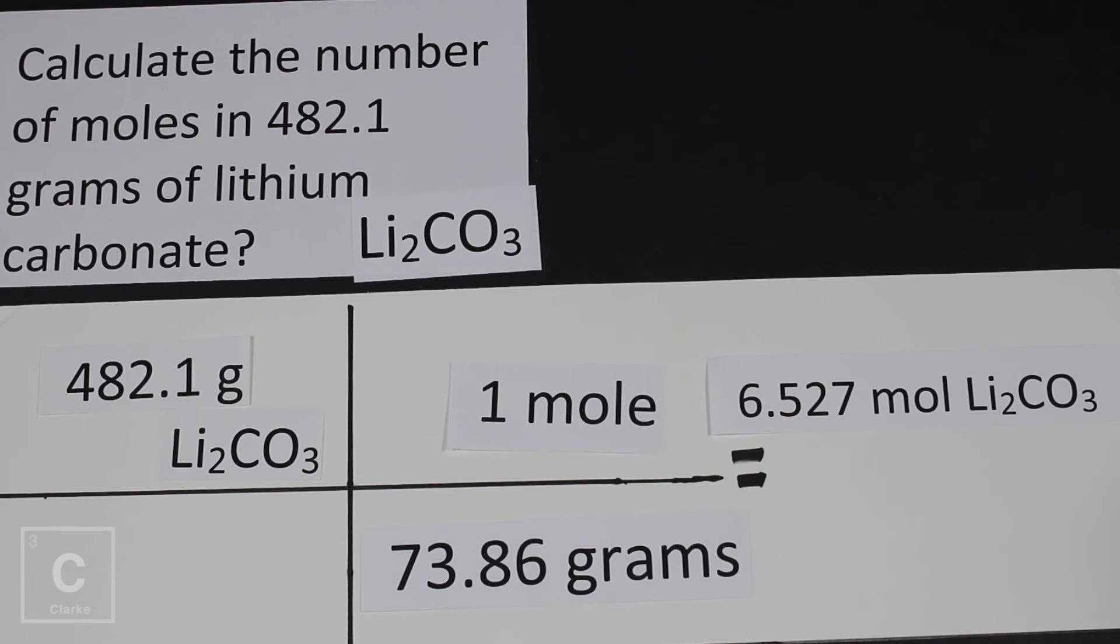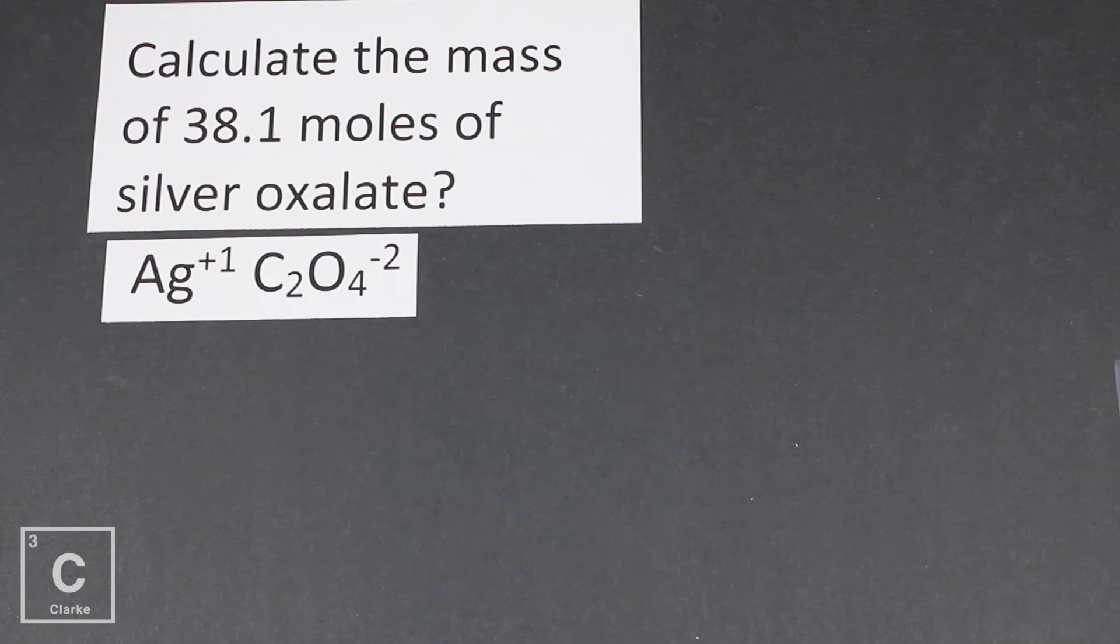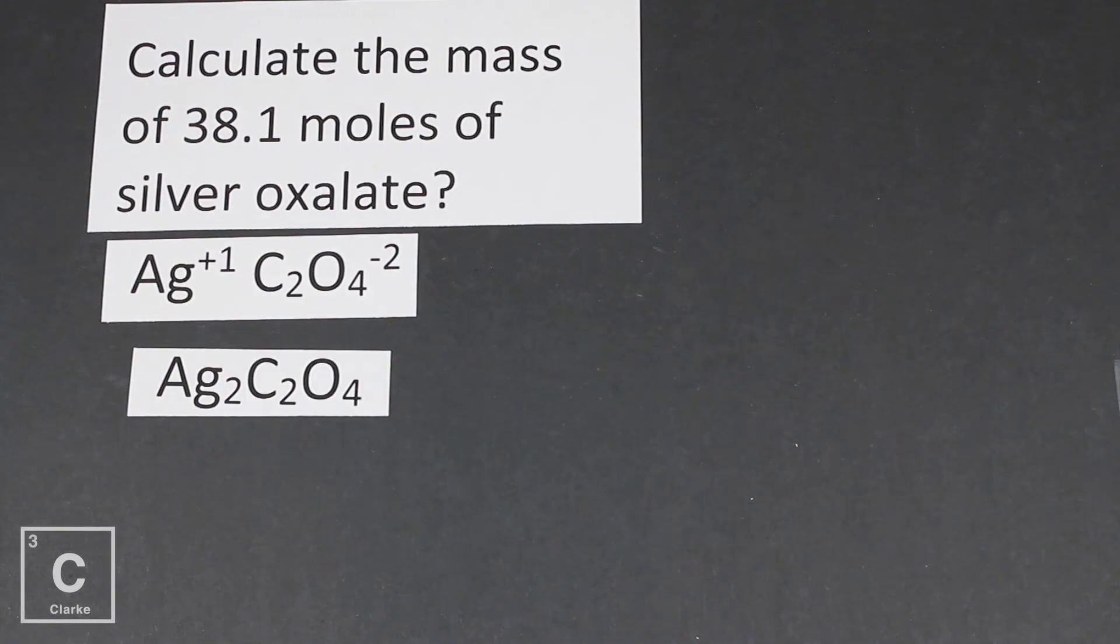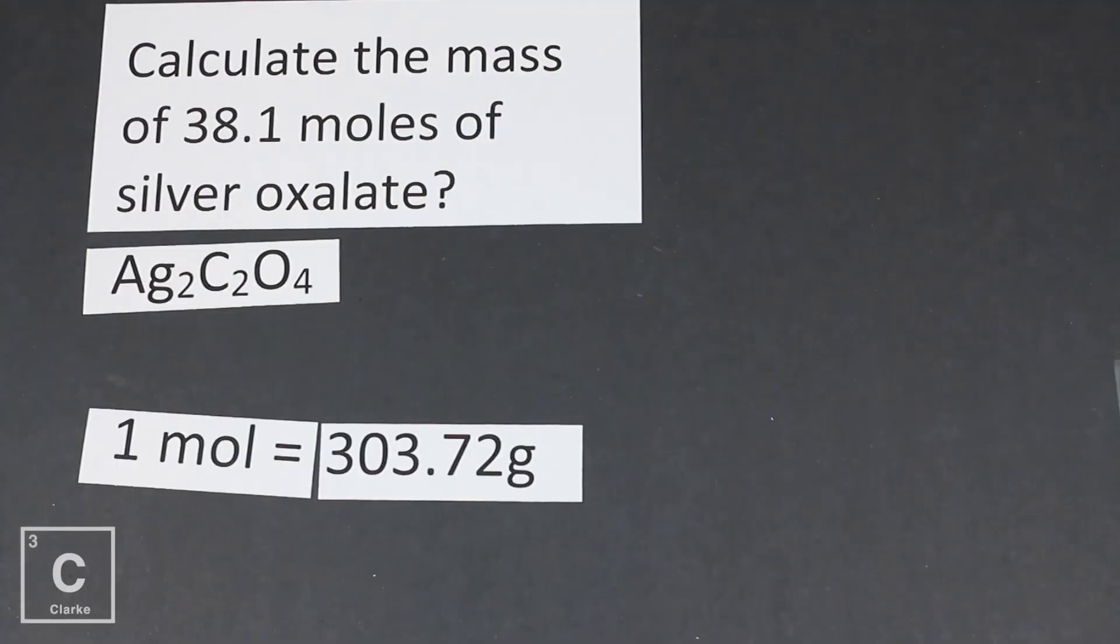I've got one more example for us to try. Once I present the question to you, you should press pause and see if you can work it out on your own and then press play and see if you got it right. Calculate the mass of 38.1 moles of silver oxalate. Silver is a plus one. Oxalate's a minus two. So we've got to crisscross those numbers down. That gives us Ag2C2O4. Again, when the problem mentions mass or grams, you've always got to figure out the molar mass. So let's do that real quick. So again, remember, I'm getting these masses from the periodic table. We get a total molar mass of silver oxalate of 303.72 grams.